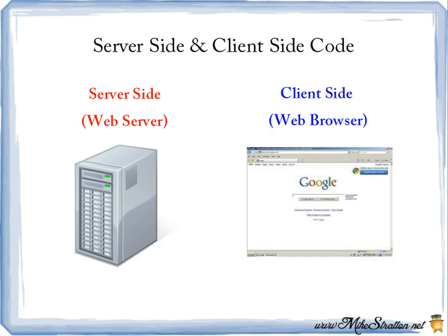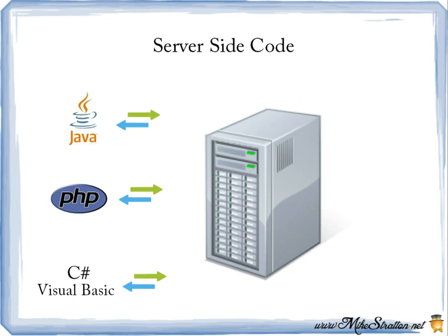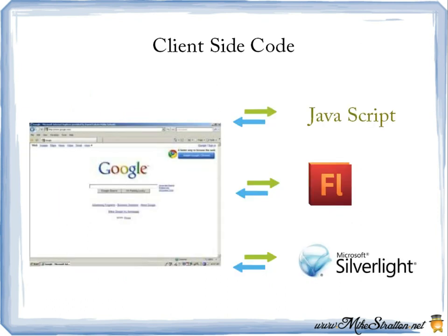Next, we'd like to discuss the difference between server-side and client-side code. Server-side code is basically the code that's up on the server. Client-side code is the code that's within the web browser. Common server-side languages include Java, PHP, C Sharp, and Visual Basic. Note that Java is separate from JavaScript — Java is an Oracle Sun Microsystems proprietary language. JavaScript is client-side code that works within the browser, while Java is a server-side implementation. Other client-side technologies include Flash and Silverlight. Silverlight is commonly attached to the programming language known as XAML, spelled X-A-M-L.